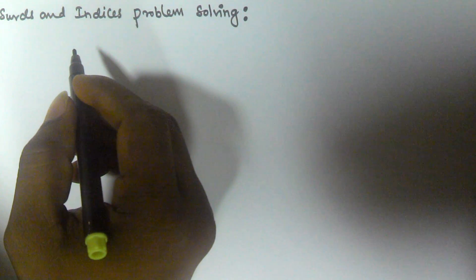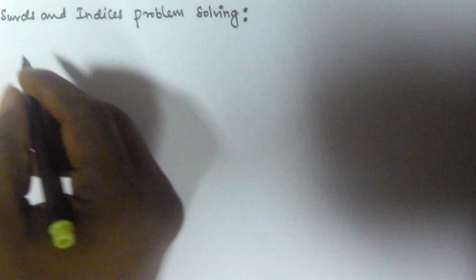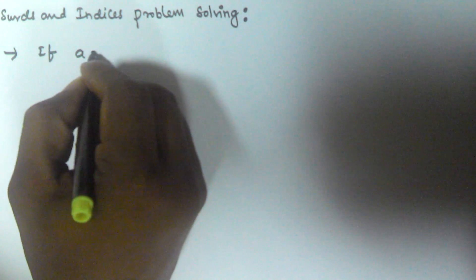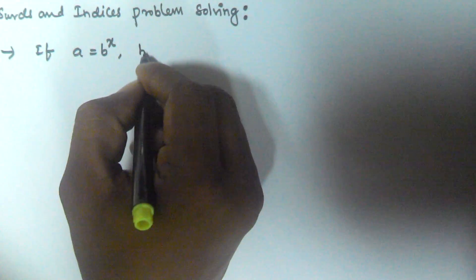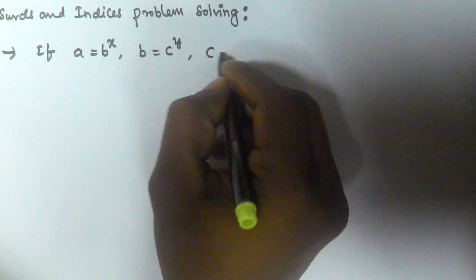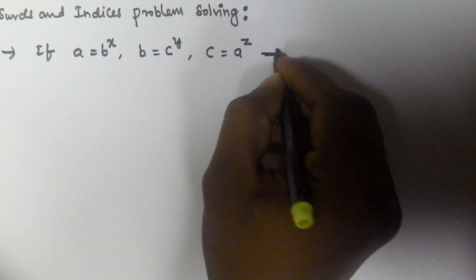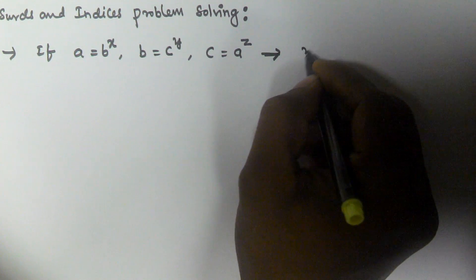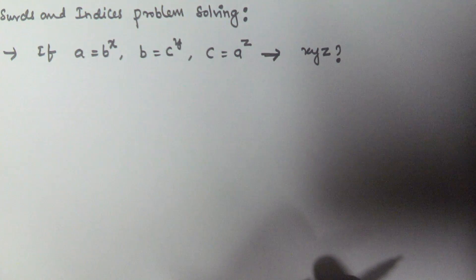Hello friends, in this video we will see some problems based on sets and indices. For example, if a is equal to b to the power of x, and b is equal to c to the power of y, and c is equal to a to the power of z, then find the value of xyz.